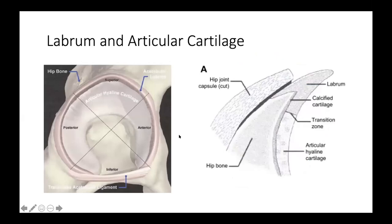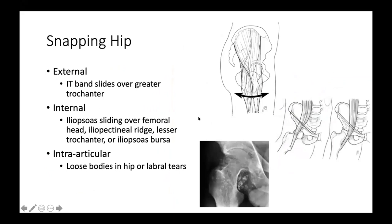The labrum and articular cartilage share a continuous transition zone inside the acetabulum. When doing arthroscopic surgery with a camera, you can repair these structures. Snapping hip syndrome can be three types: external snapping hip, from the iliotibial band sliding over the greater trochanter; internal snapping hip, from the iliopsoas tendon sliding over structures such as the femoral head; and intra-articular snapping hip, due to loose bodies or labral tears.